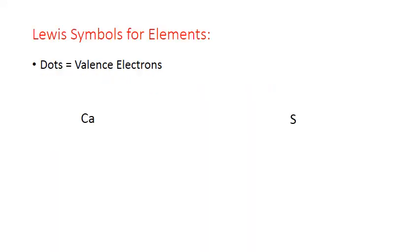We'll start with Lewis symbols for neutral atoms of different elements. In Lewis symbols, we visually represent the valence electrons that an atom possesses using dots. We start with the symbol for the element, and then we place a dot around that symbol for each valence electron it possesses. For example, calcium is in column 2 of the periodic table, which means it has two valence electrons, so we place two dots on calcium. The convention is that we place one dot to a side around the symbol. If we have more than four valence electrons, we start pairing up those electrons. It doesn't really matter which side we place our valence electron dots on as long as we do one to a side before we start pairing them up.